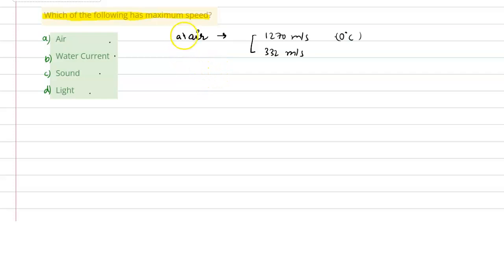Let me talk about option B, water current. The speed of water current is about 12 meters per second.